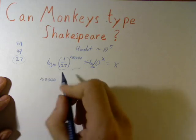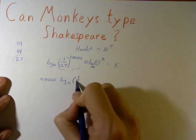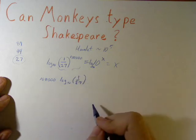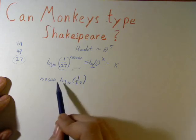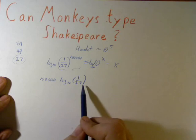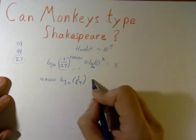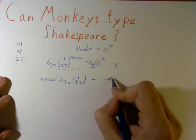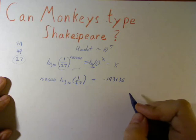So, we get log 10 of 1 over 27. Okay, well, we can solve, anyone can solve this with a calculator. If we plug this into a calculator, we get negative 1, 4, 3, 1, 3, 6. In other words,